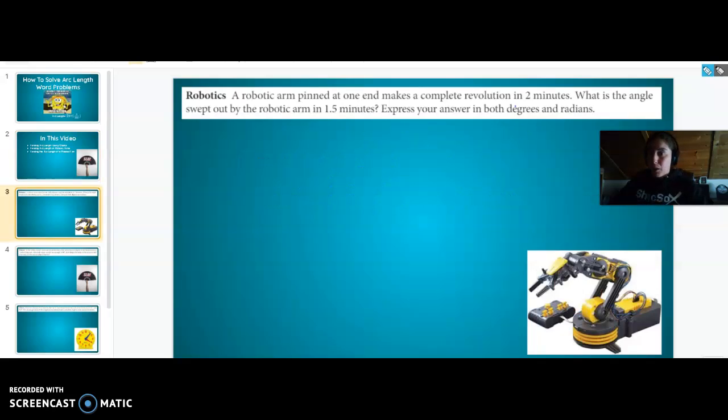The first thing we're going to look at is a robotic arm. A robotic arm pinned at one end makes a complete revolution in two minutes. That means it's pinned at one end and it makes a complete revolution in two minutes, which means it goes all the way around. What is the angle swept out by the robotic arm in 1.5 minutes? Explain in both radians and degrees.